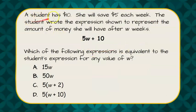We're told that a student has $10. She will save $5 each week. The student wrote the expression shown to represent the amount of money she will have after W weeks: 5W plus 10. $5 per week plus the $10 she started with.